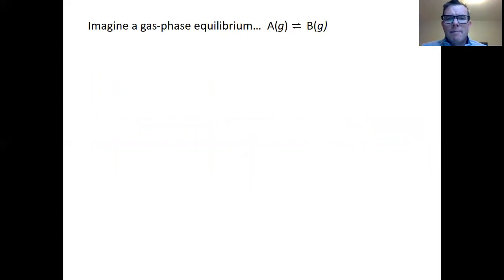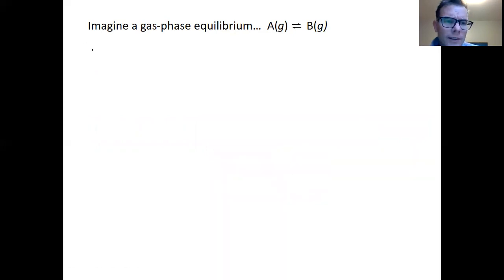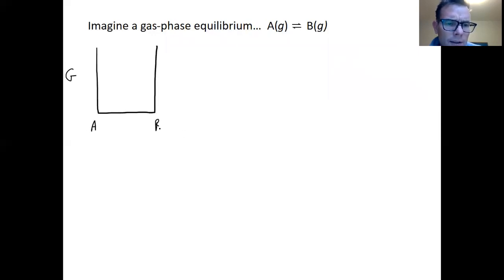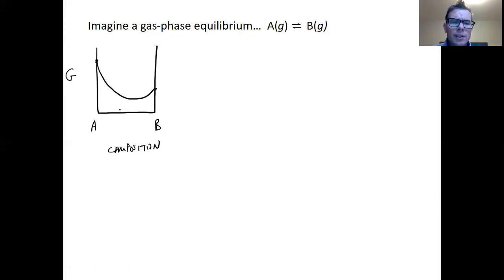As a starting point, let's imagine a gas phase equilibrium: A going to B. We know that to describe equilibrium we think about the Gibbs energy, so we make a plot. The Gibbs energy is on the y-axis; pure A is on one end, pure B on the other, and the x-axis describes the composition. A might be at some high Gibbs energy, B at a lower one, with a curve connecting those two.